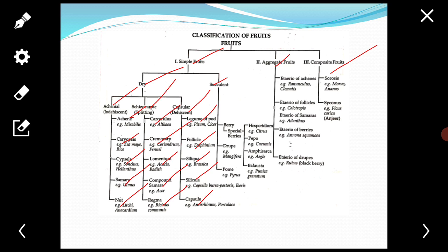Next, that is the capsule. These fruits developed from a compound pistil. Example: Antirrhinum, Portulaca.